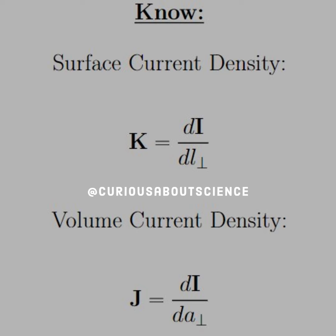And in similar fashion, the volume current density is the rate of change of the current with respect to the perpendicular component of the area that it's traveling through.